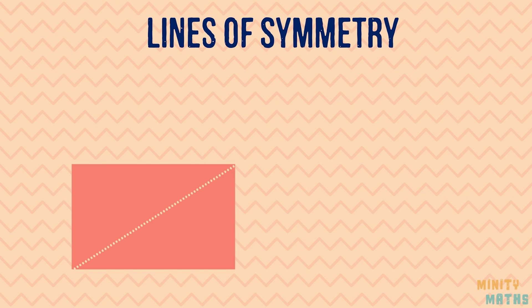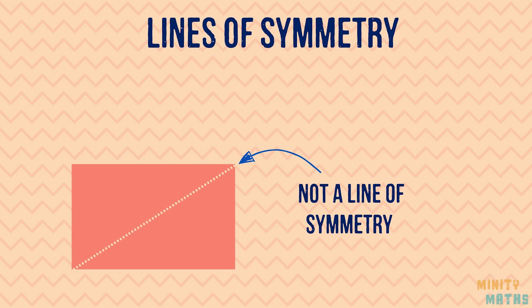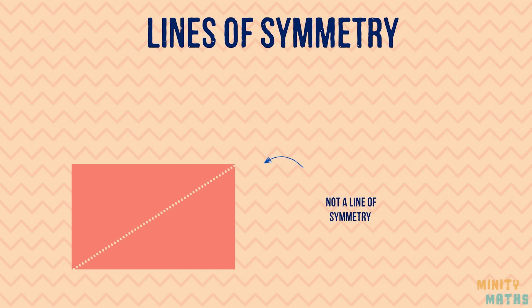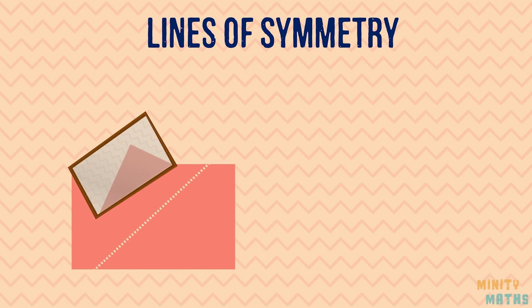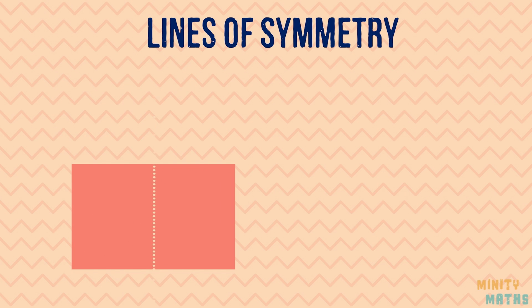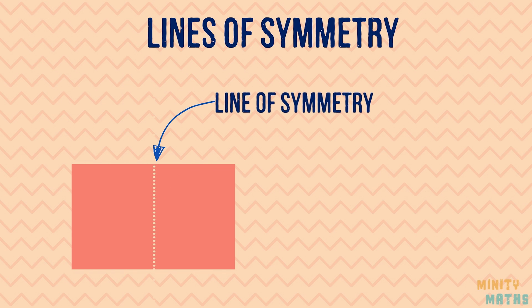This is not a line of symmetry. This is because if we were to place a mirror along this line, the shape would no longer look like the original shape. This is a line of symmetry.